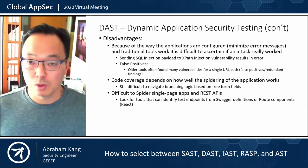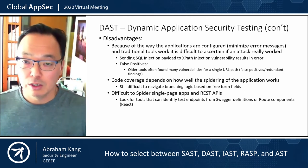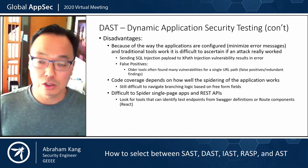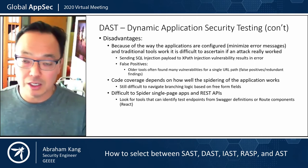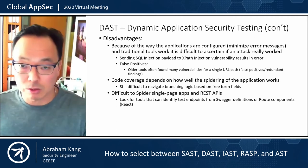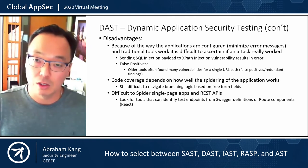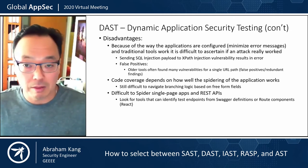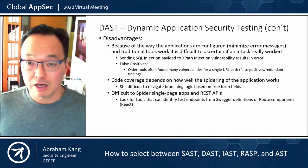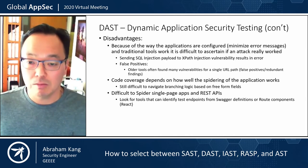When we talk about disadvantages, it's difficult if an application is coded correctly in terms of returning non-disclosing error messages for a DAST tool to actually understand if the payload it sent in was causing a particular vulnerability. So if you have an XPath injection vulnerability and you pass a SQL injection payload to it, it's going to return an error. But you don't know if that error was really caused by a SQL injection vulnerability or XPath, so what you'd find is a lot of false positives and a lot of vulnerabilities cited for the same URL path.